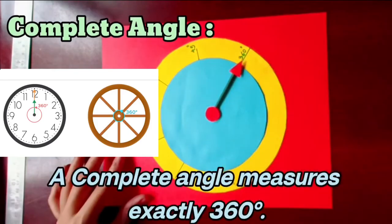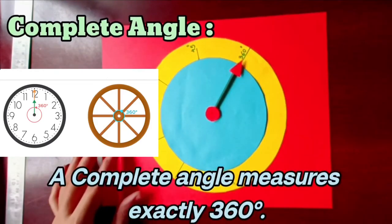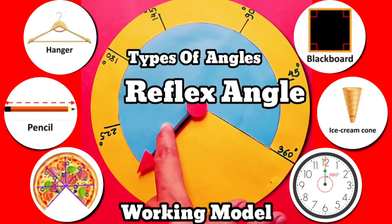Complete angle measures exactly 360 degrees. For example, one whole round of the minute hand and hour hand of a clock, and one whole round of a wheel is 360 degrees. This is how the types of angle working model works. If you like it, share it and subscribe to the channel for more new videos. Thanks for watching.